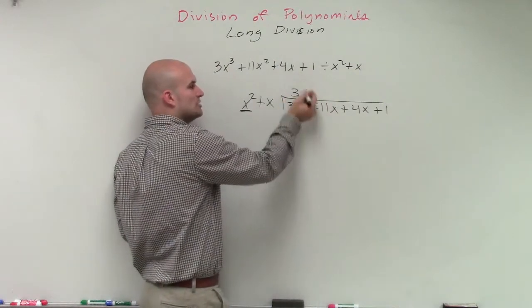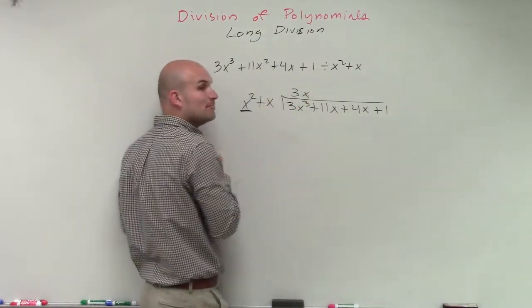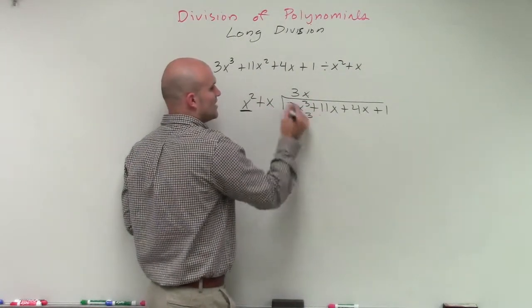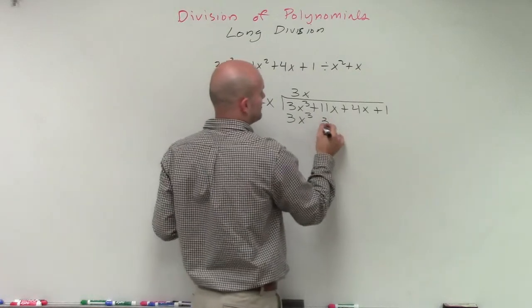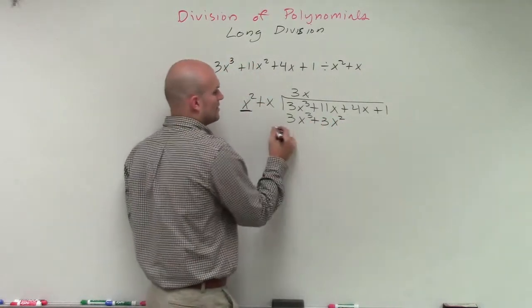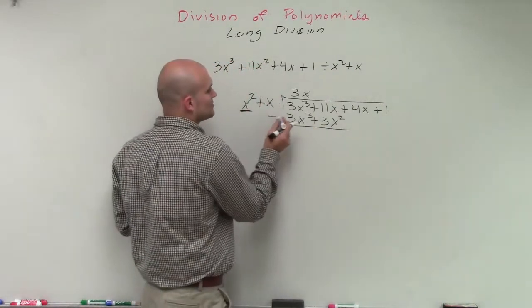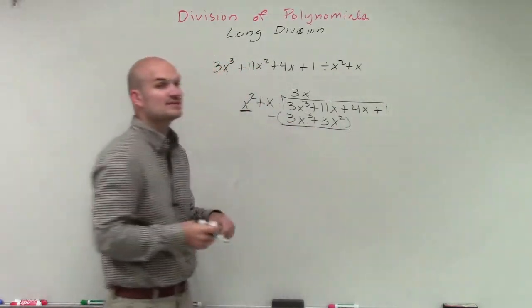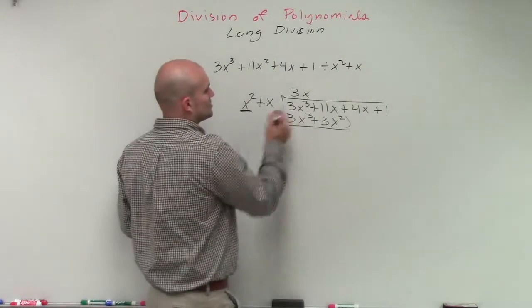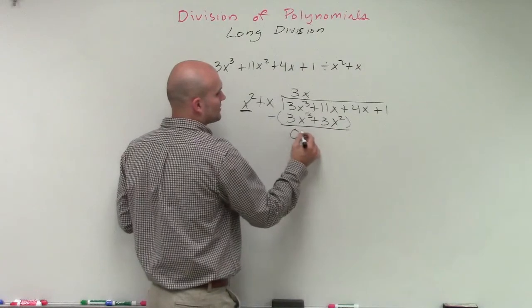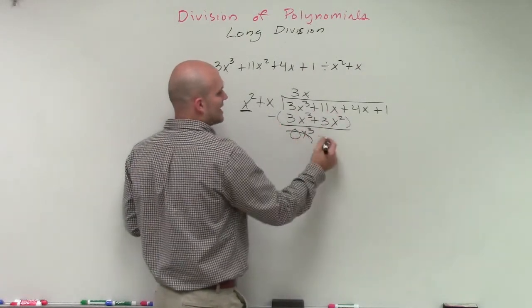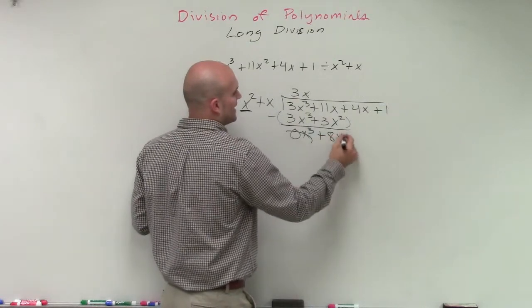Then I take my first term, my quotient, and make sure I multiply back by both terms of my divisor. So 3x times x squared is going to be 3x cubed. And 3x times x is going to be a 3x squared. That's a positive 3x squared. Then I subtract my two rows. Make sure when you subtract, you make sure you put them in parentheses. That means you're going to subtract both of your terms. 3x cubed minus a 3x cubed is a 0x cubed, which is just 0. 11x squared minus 3x squared is going to be a positive 8x squared.